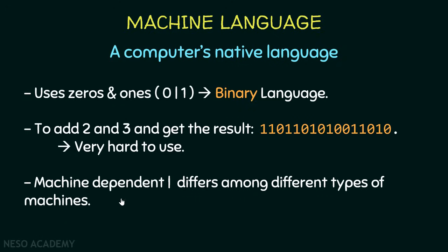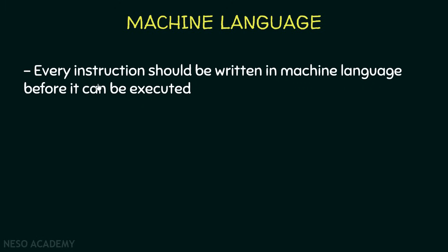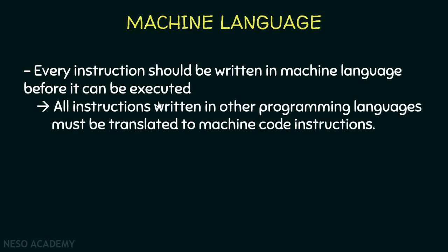Every instruction must be written in machine language before it can be executed. Later on we're going to write programs using Java, so the instructions will be written using the Java programming language, and all of those instructions must be translated to machine code before we can execute them. This applies to all other programming languages as well.